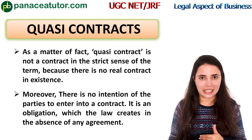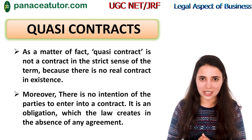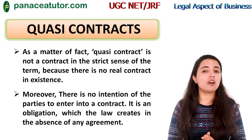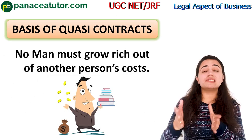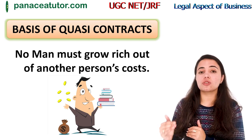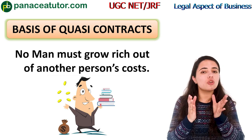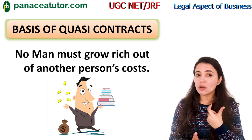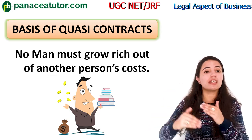Law creates obligations like this. Now we will learn in detail about which situations create these obligations. The most important thing is: what is the basis of quasi-contract? The basis of quasi-contract is an equitable principle — no man must grow rich out of another person's cost. This means we cannot become rich at anyone else's expense.